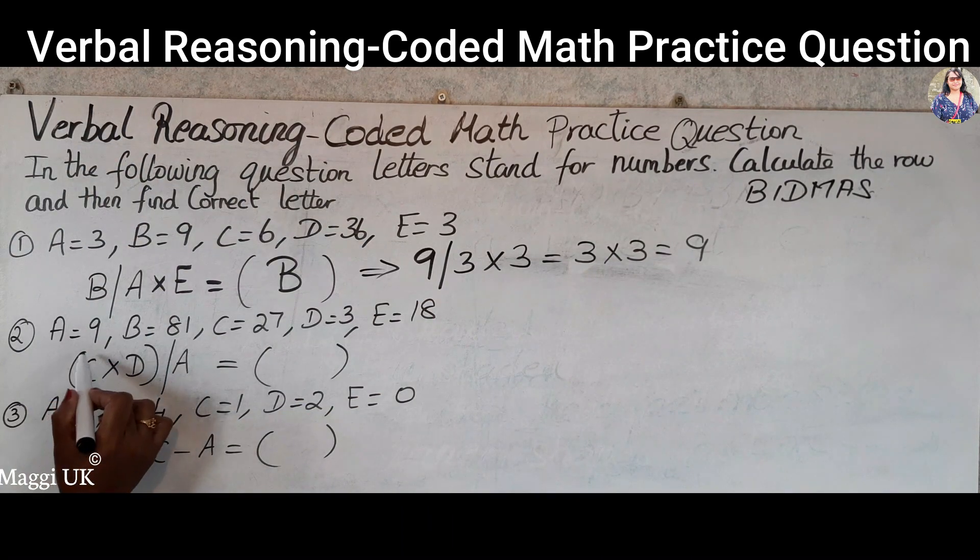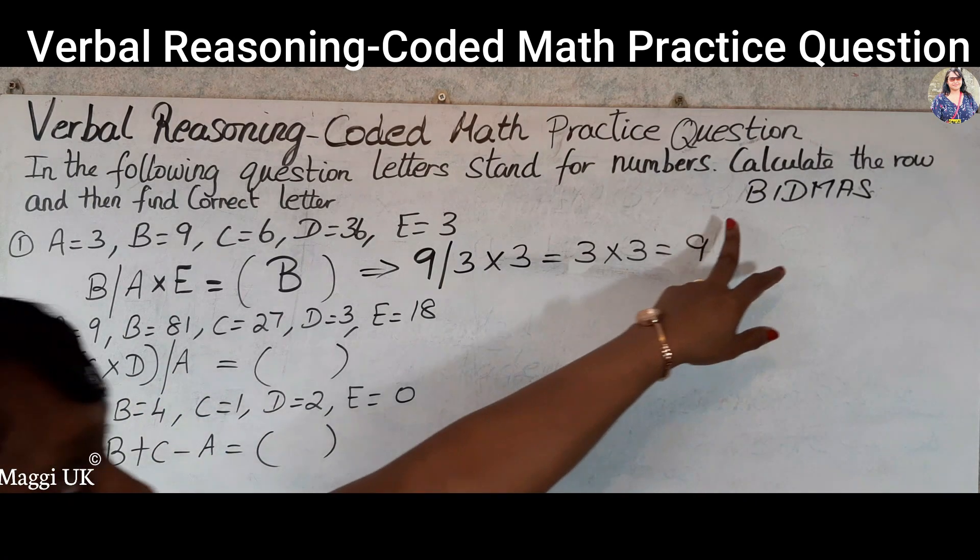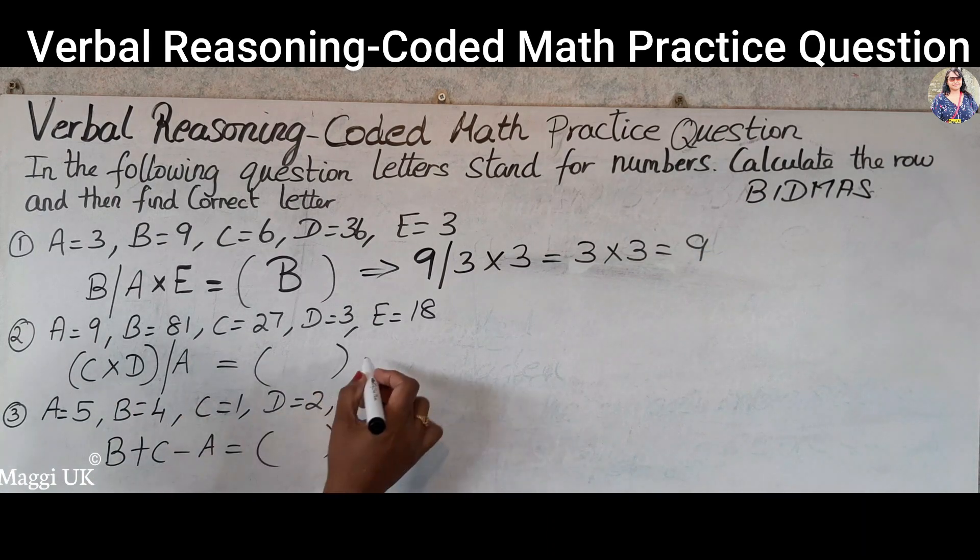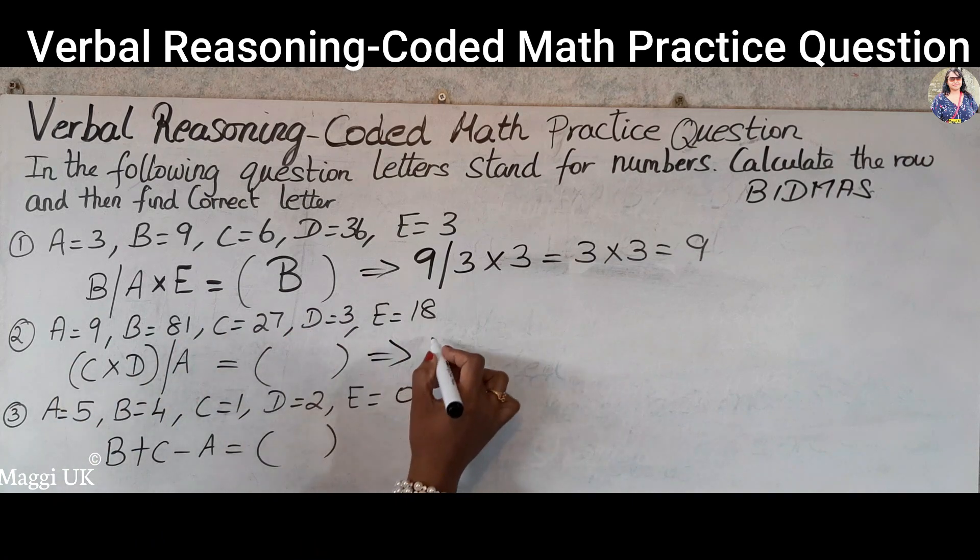Let me do the next one. You have a bracket now, and we have C times D. When you have brackets, use again BIDMAS rule, so starting from bracket. Let me do this one first. C is, we go for this one, they have a different number which is 27.